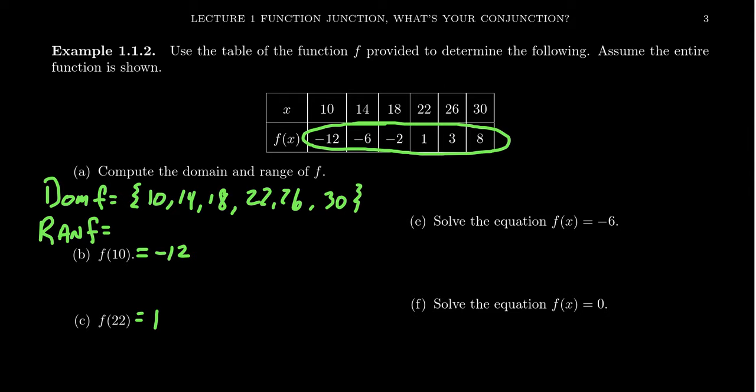We can put them in order if we wanted to, which it is actually in ascending order, which is fine. But the order, when you list it, doesn't matter too much here. Negative 12, negative 6, negative 2, 1, 3, and 8.